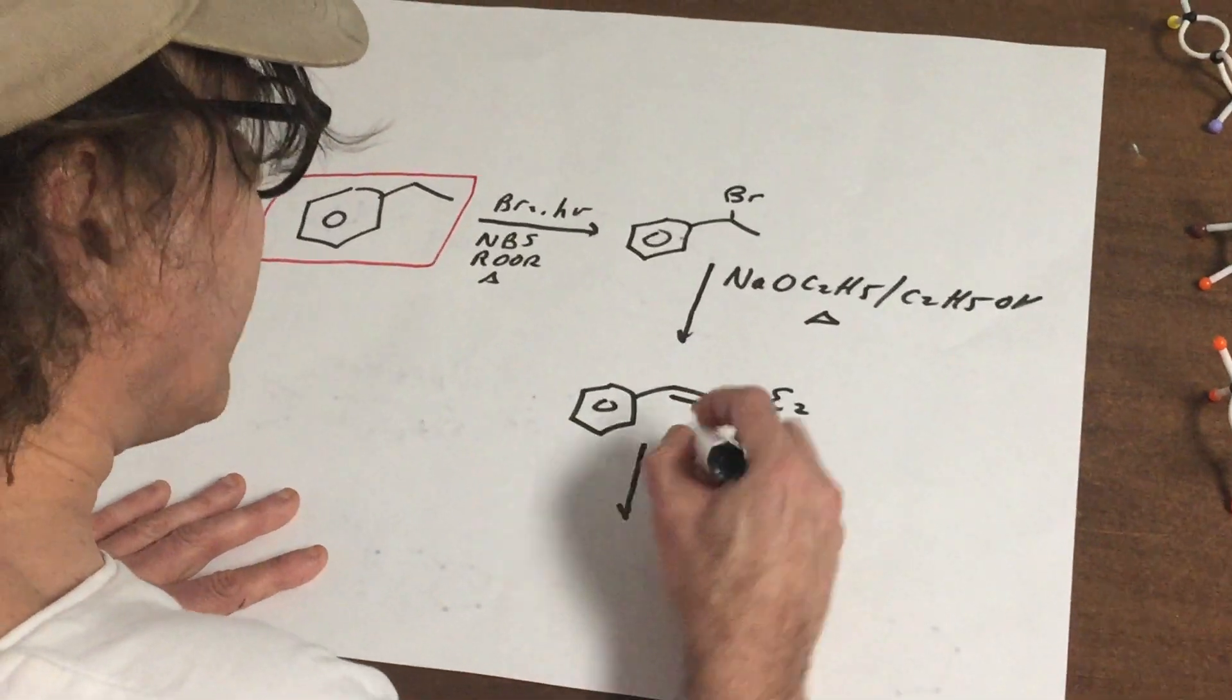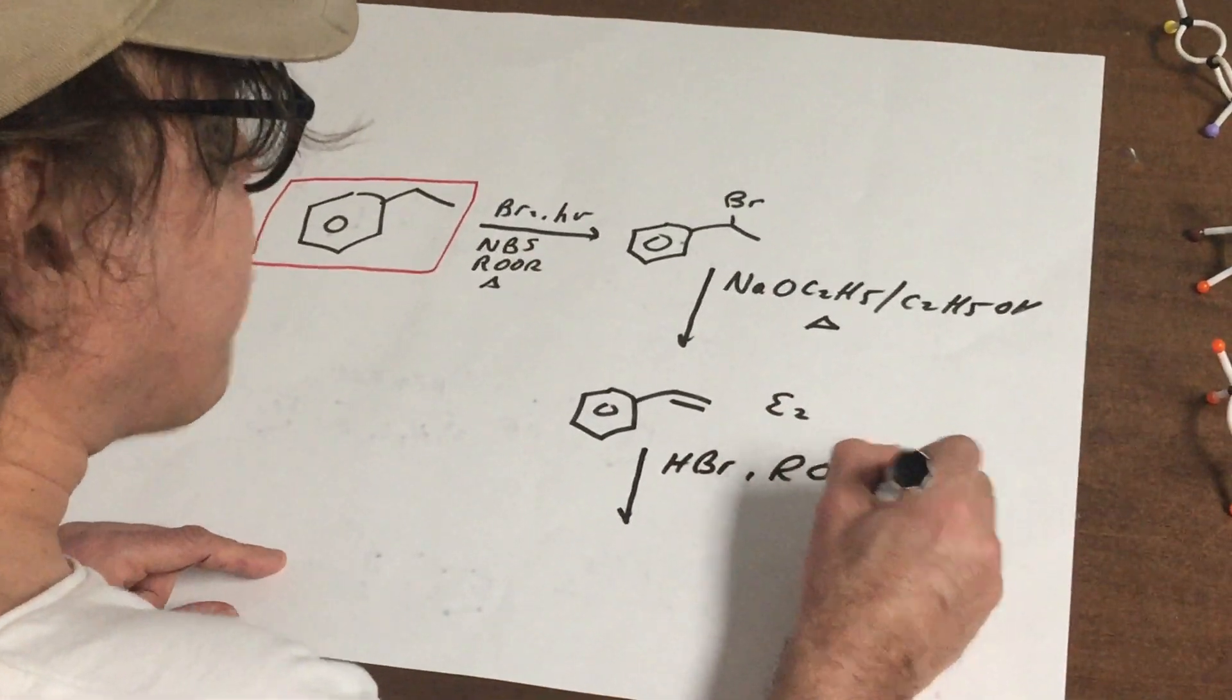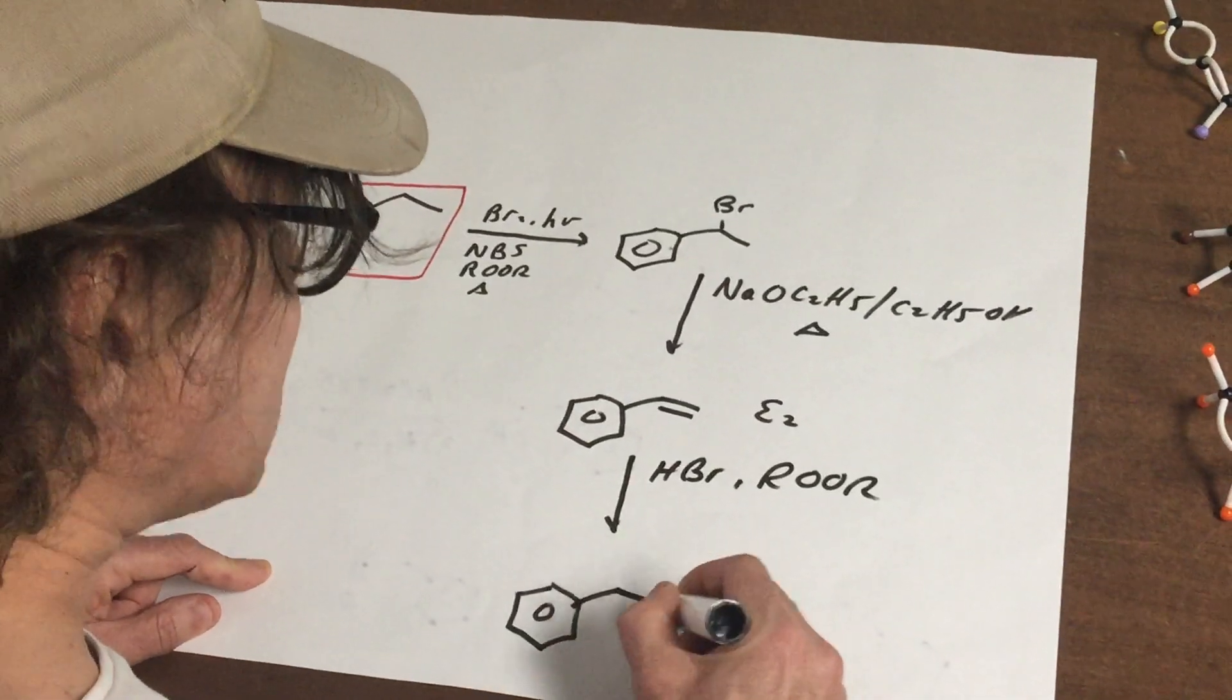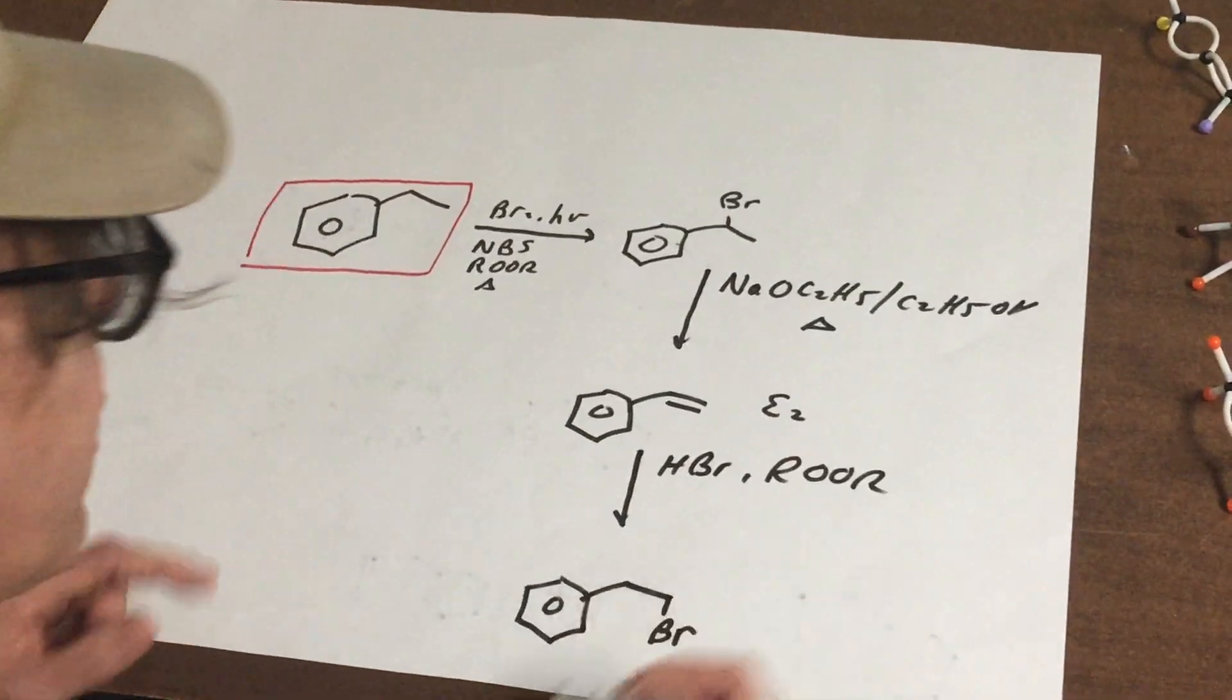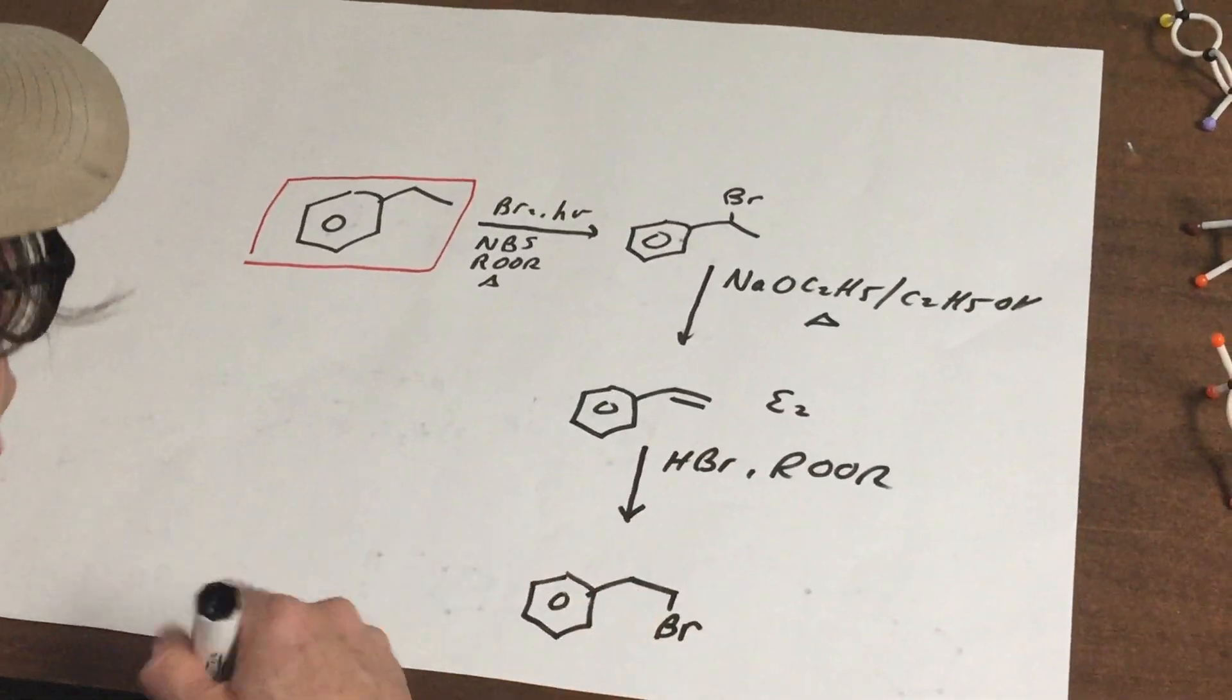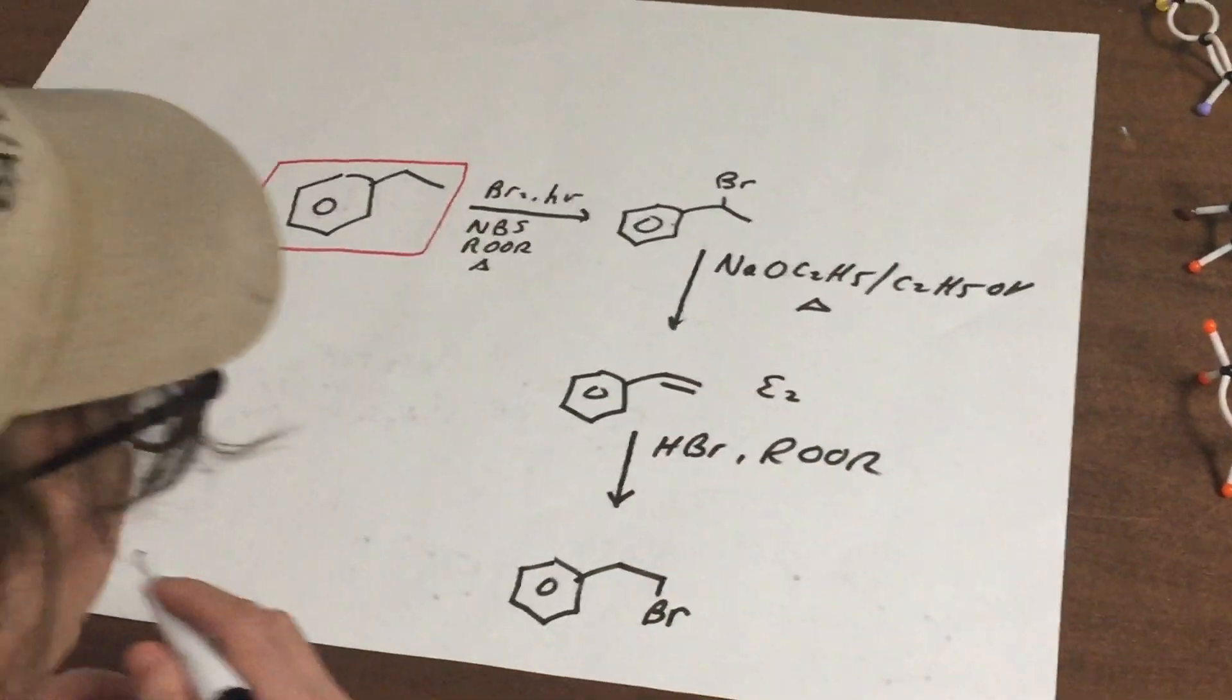Now, what I'm then going to do is why don't we treat it with HBr and peroxide. Short, bad question for the DAT. What that's going to do, it's going to add on a bromine into the position, what we call anti-Markovnikov. The carbon with the most H's gets the halogen.